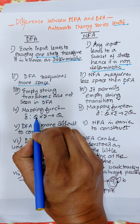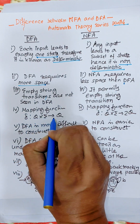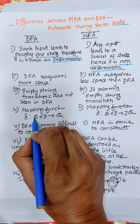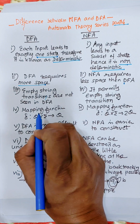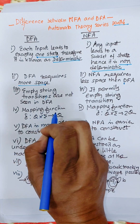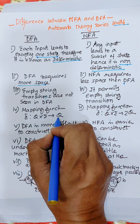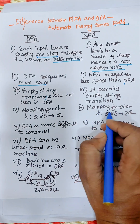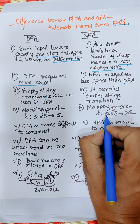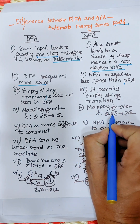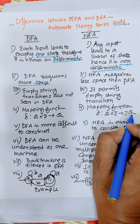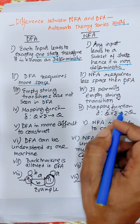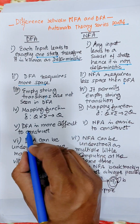The mapping function of DFA is Q × Σ → Q, meaning for every state and input there is one and only one output state. But in the case of NFA, the mapping function is Q × Σ → 2^Q, or a subset of Q, which is known as the power set.